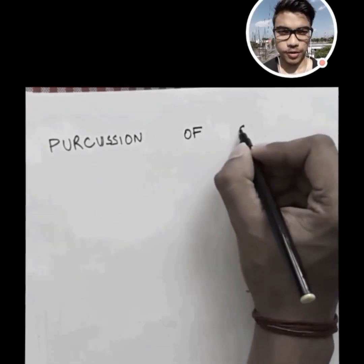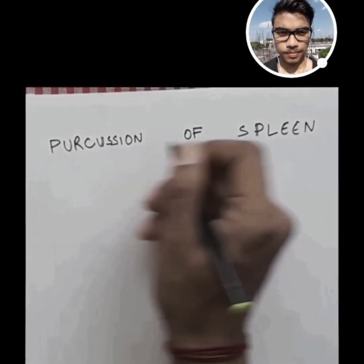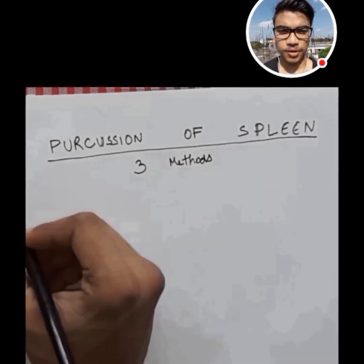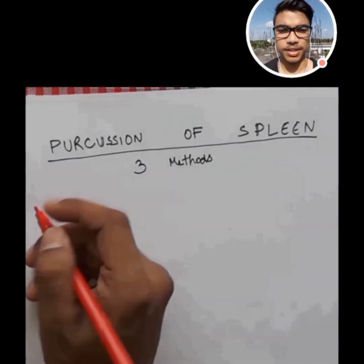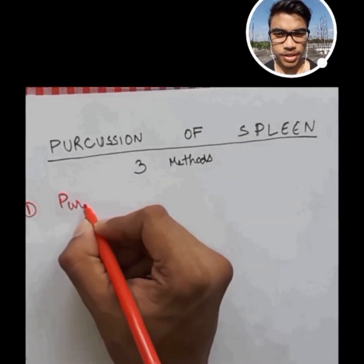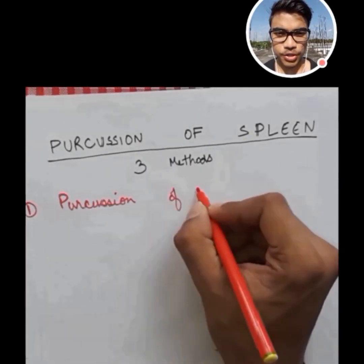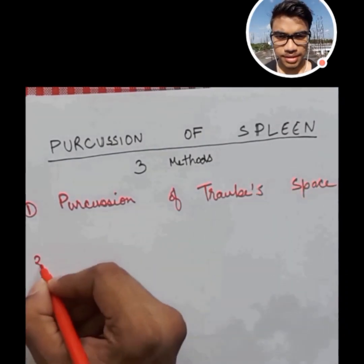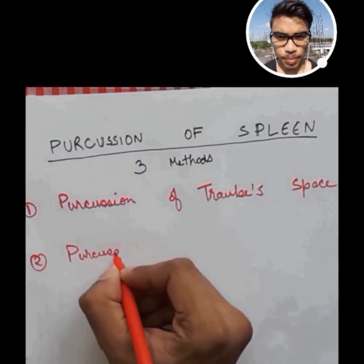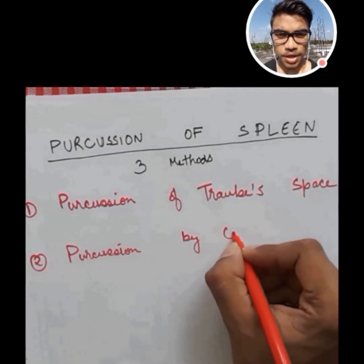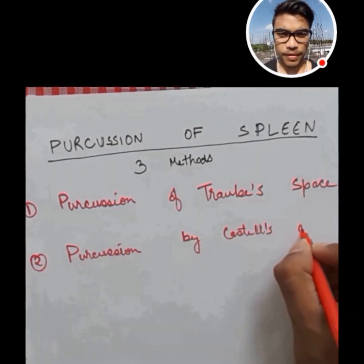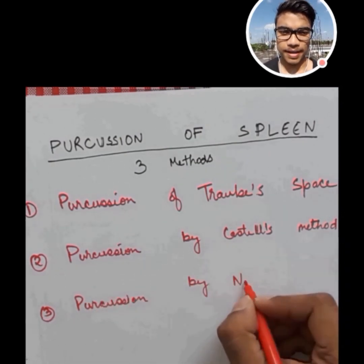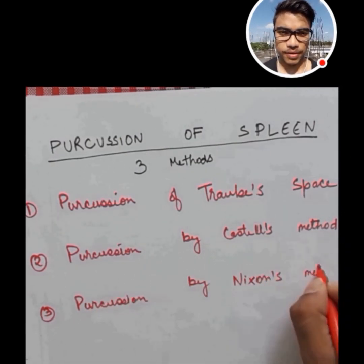Percussion of Spleen. There are three methods of percussion of the spleen. The first is percussion of drop space. Second, percussion by Cassel's method. And finally, the percussion by Nixon's method.